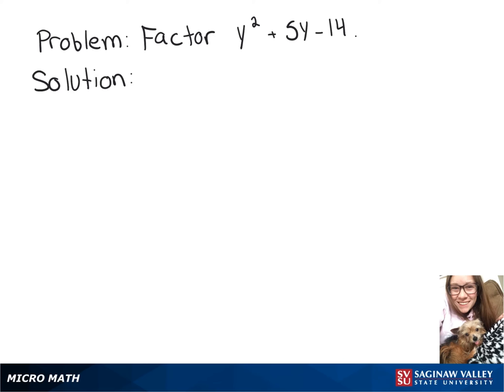We're going to factor y squared plus 5y minus 14. Since our leading coefficient is 1, we can think of numbers that multiply together to give negative 14.